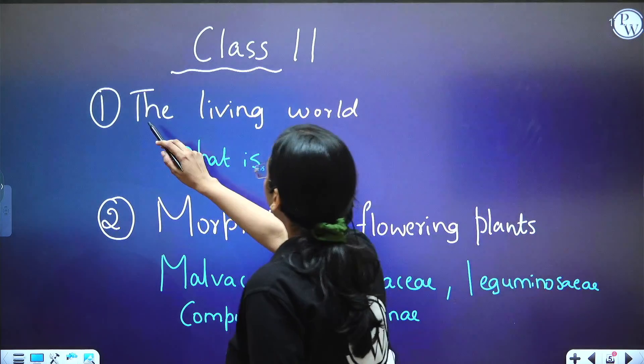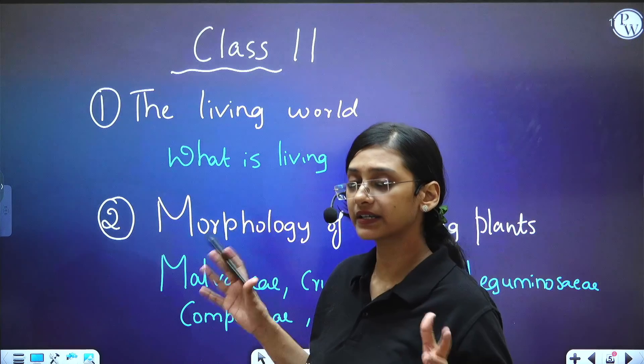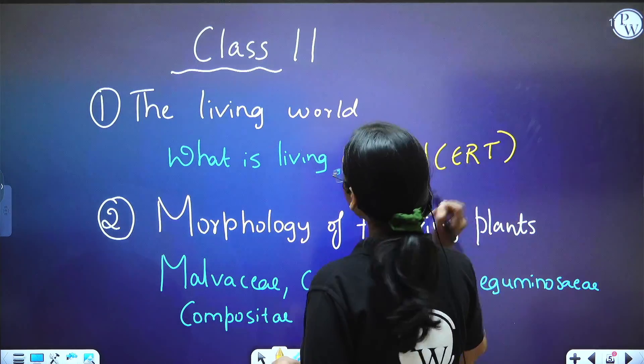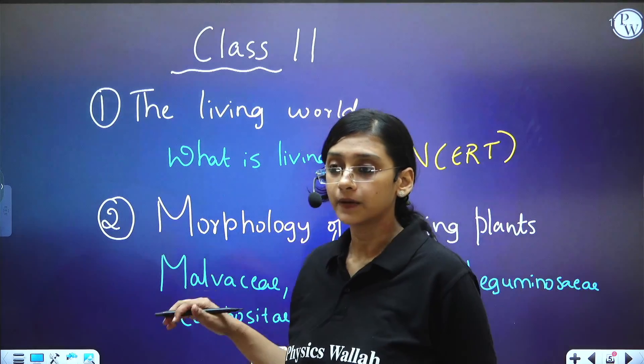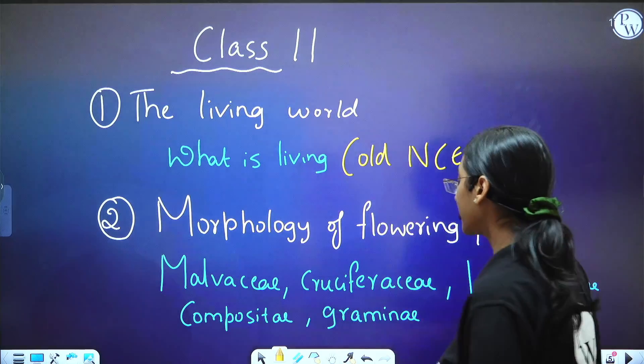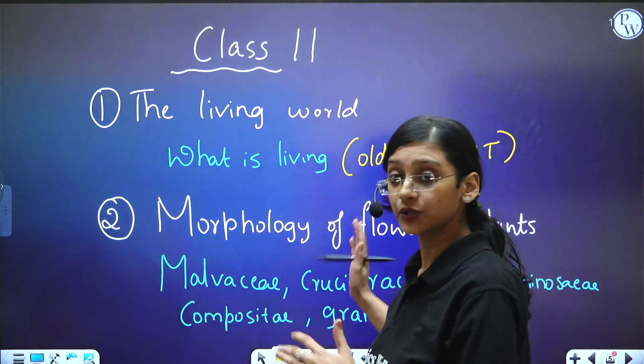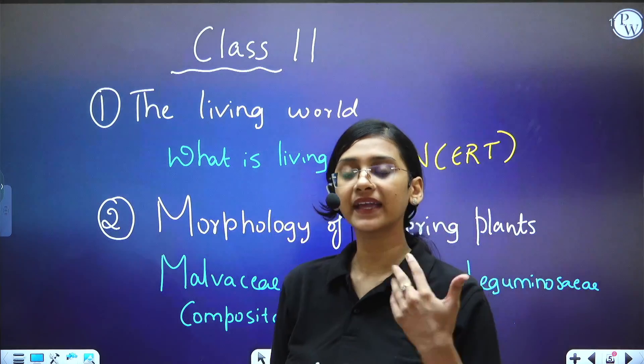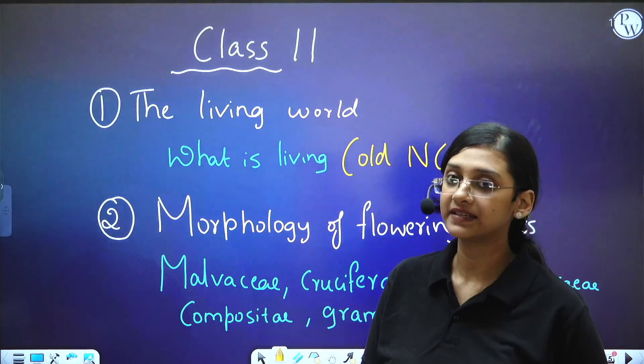So those concepts are there in old NCERT but not there in new NCERT. Such concept is from the chapter, 11th standard chapter, the living world, and the concept is what is living, which is one page or one paragraph explanation which is of old NCERT. And then there is a chapter called morphology of flowering plants. So from this chapter, they have added a syllabus that is family Malvaceae, Cruciferae, Leguminosae, Compositae, Graminae. So these families are not there neither in old NCERT nor in new NCERT, but you have to study for NEET 2024.